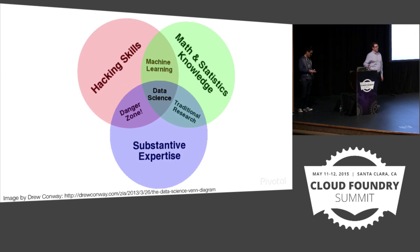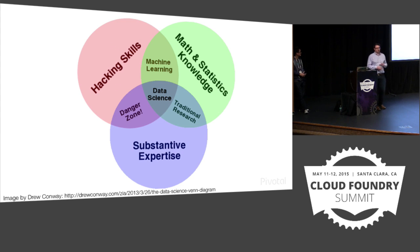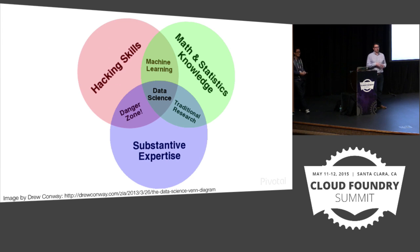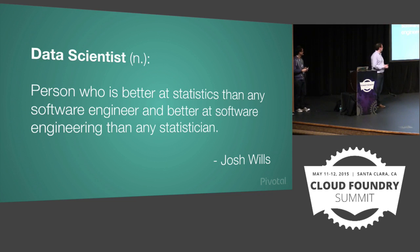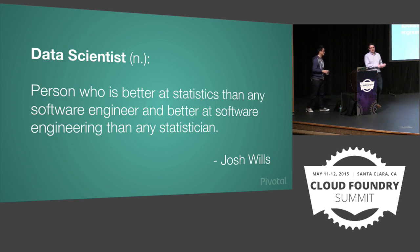A really brief recap: what is a data scientist and what is part of their job? This Venn diagram was famously created by Drew Conway. It shows the mix of skills you need: hacking and coding skills, maths and statistical knowledge, and domain knowledge in one area. When you get the intersection of all three, you get data science. A different way of saying it is Josh Wills' quote: a data scientist is a person who's better at statistics than a software engineer and better at software engineering than a statistician.